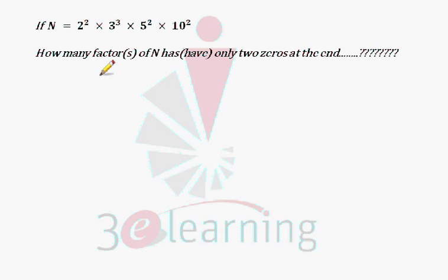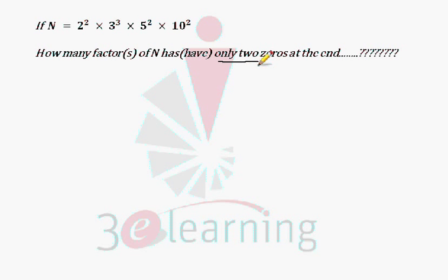Hello, today we have to find the total number of factors of n that have exactly two zeros at the end. We need to know how to find the number of zeros, but here the question is only two zeros, or exactly two zeros.